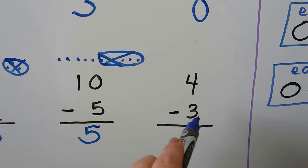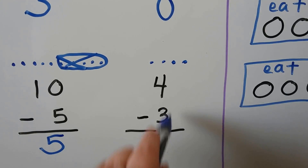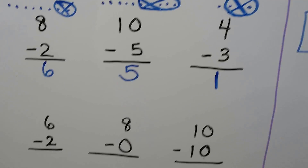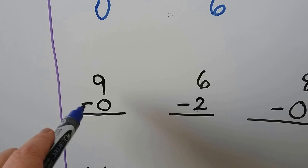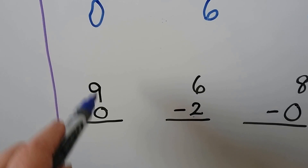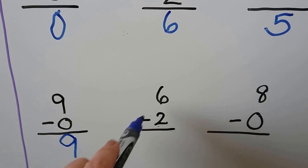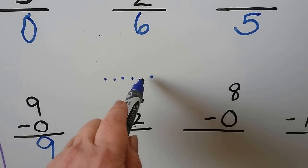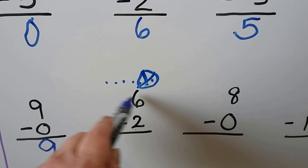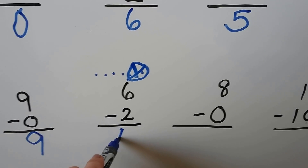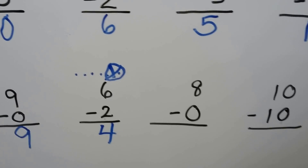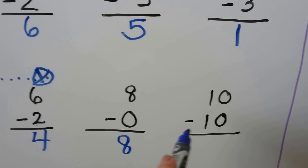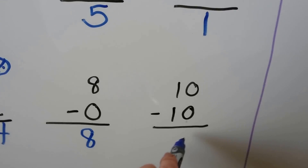We can have four and take three away — that leaves one. Nine minus zero — when we subtract zero from a number, the number stays the same. Six minus two — make six dots and take two away. How many are left? Four. Six minus two is equal to four. Eight minus zero — when we take zero away, the number stays the same. Ten minus ten — we're taking all away, so the answer is zero.